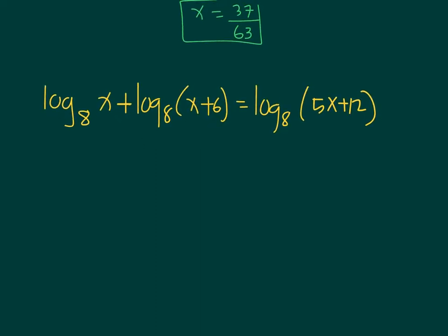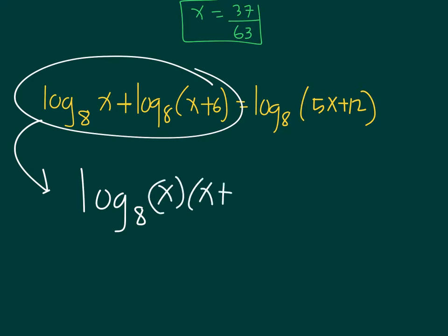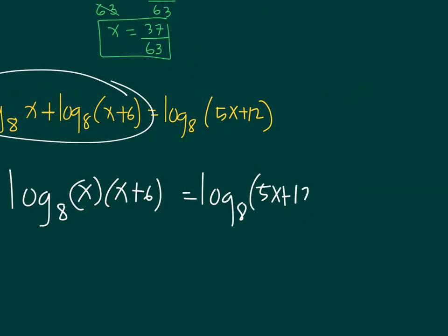Same idea: simplify the logarithmic equation. On the left side we have the sum of two logarithms, so we apply the product law. Log base 8 of x plus log base 8 of (x+6) becomes log base 8 of [x(x+6)]. On the right side we copy log base 8 of (5x+12).